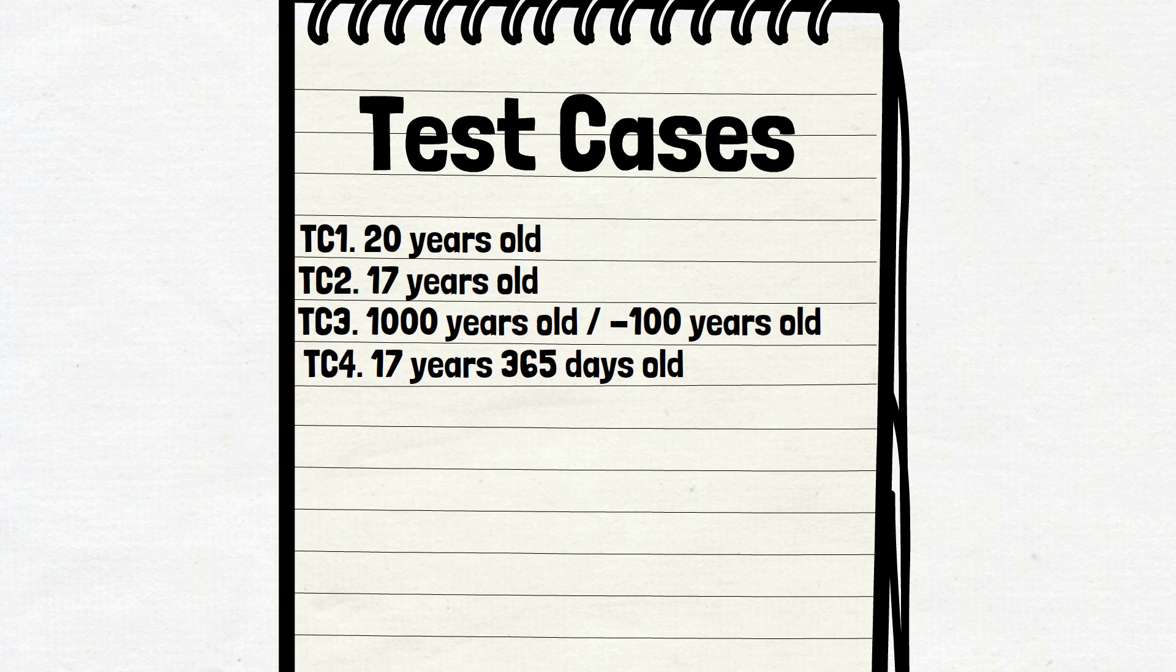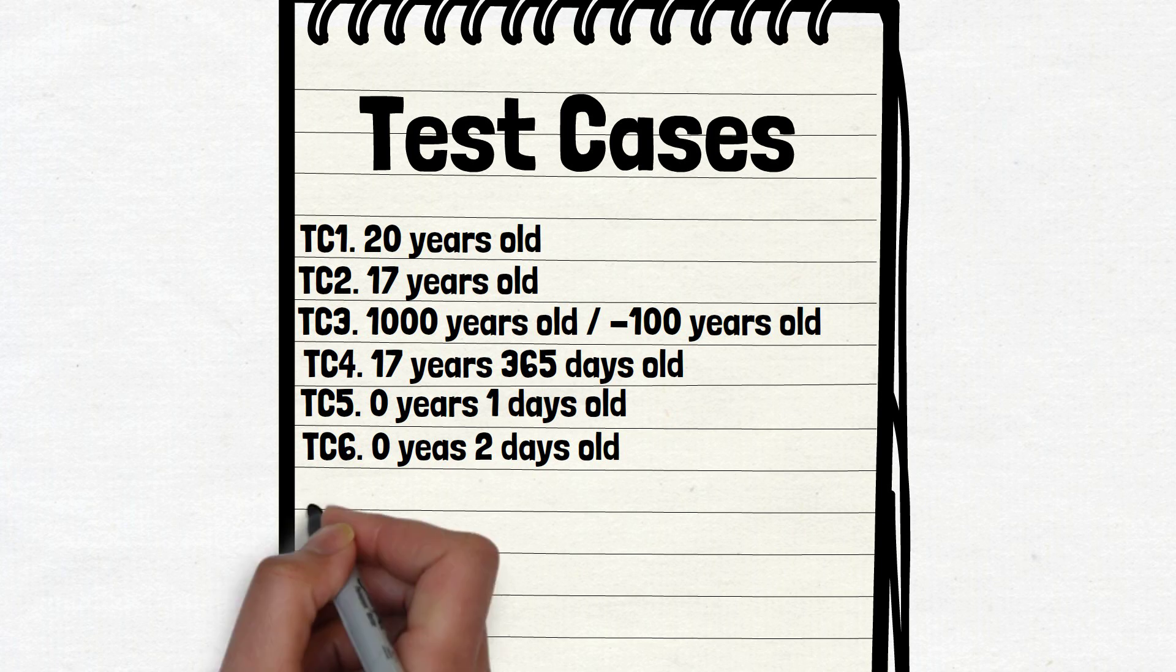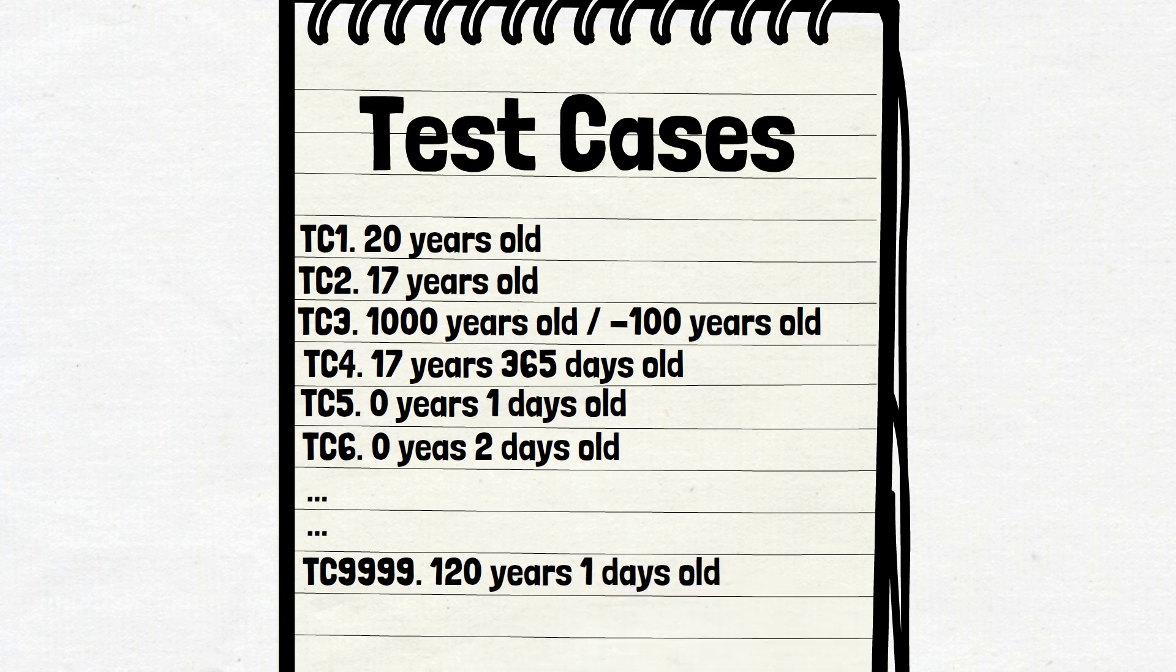And now you are confused. So you start to put values. Zero years and one day old user. Zero years and two days old user. And you can do it for a very long time. With thousands and thousands of scenarios, you simply don't know what to do. But all of them are similar. How to know when testing is enough? When should you stop?